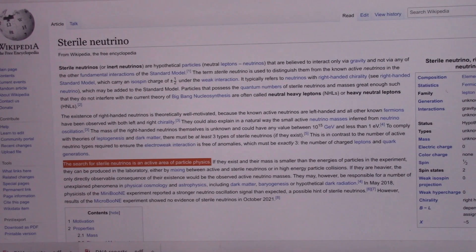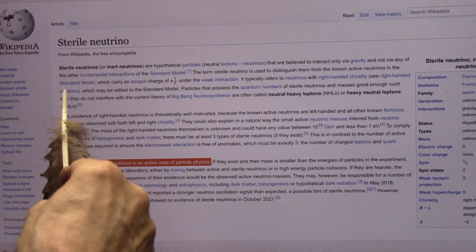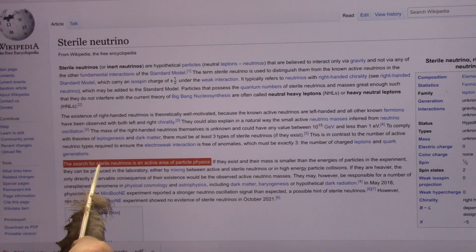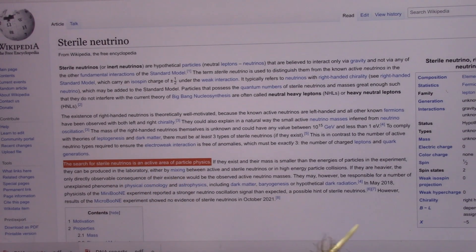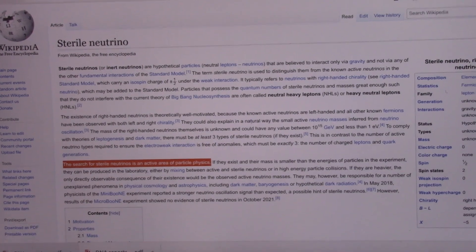You see right there, nobody will speak to me at all. Sterile neutrino - the search for sterile neutrinos is an active area of particle physics. They can't find them. I got them.